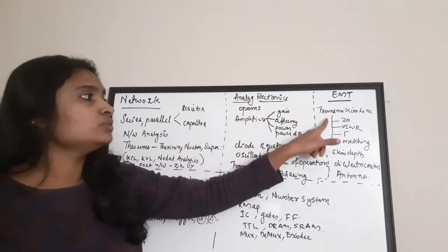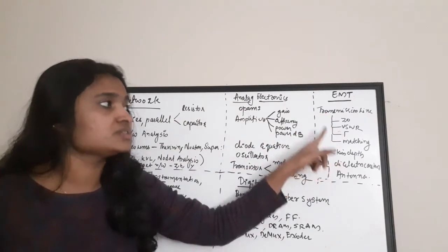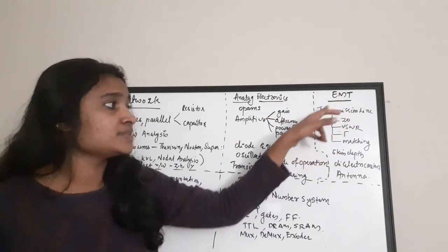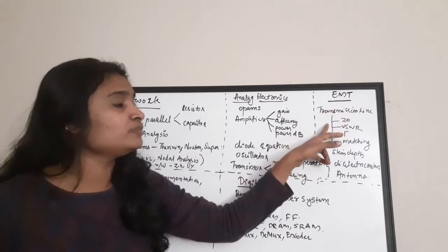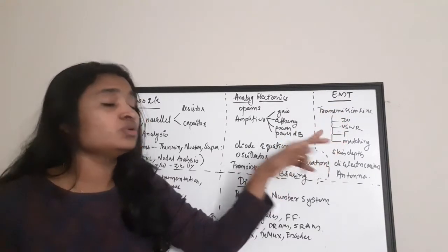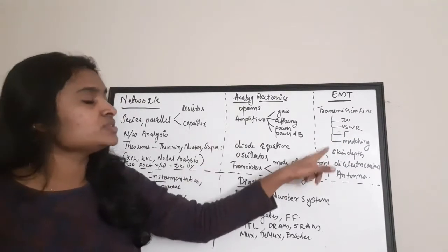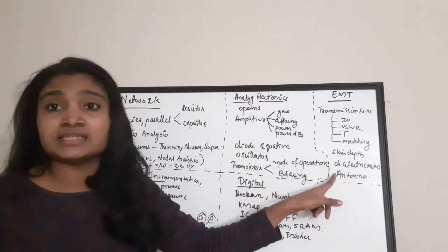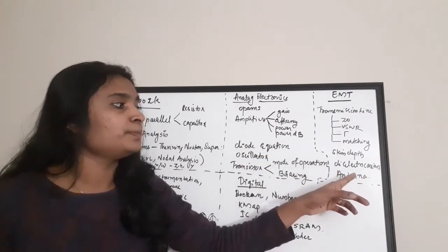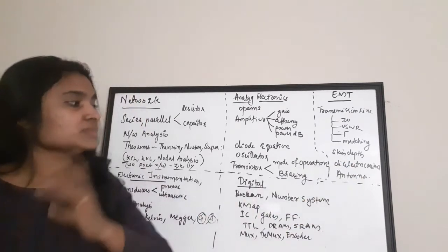Next is Electromagnetic Theory (EMT). Mainly concentrate on transmission line properties — I've seen many question papers with transmission line questions covering characteristic impedance, Voltage Standing Wave Ratio (VSWR), reflection coefficient, and matching. Also study skin depth, dielectric loss, and antenna problems, including antenna power gain in dB.